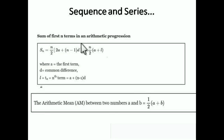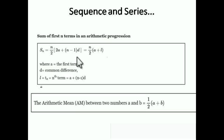The sum of n terms of an AP is Sₙ = (n/2)[2a + (n−1)d], where n is the number of terms, a is the first term, and d is the common difference. Use this when you know the number of terms. If the first term and the last term are given, use the alternate formula: Sₙ = (n/2)(a + l), where l is the last term.